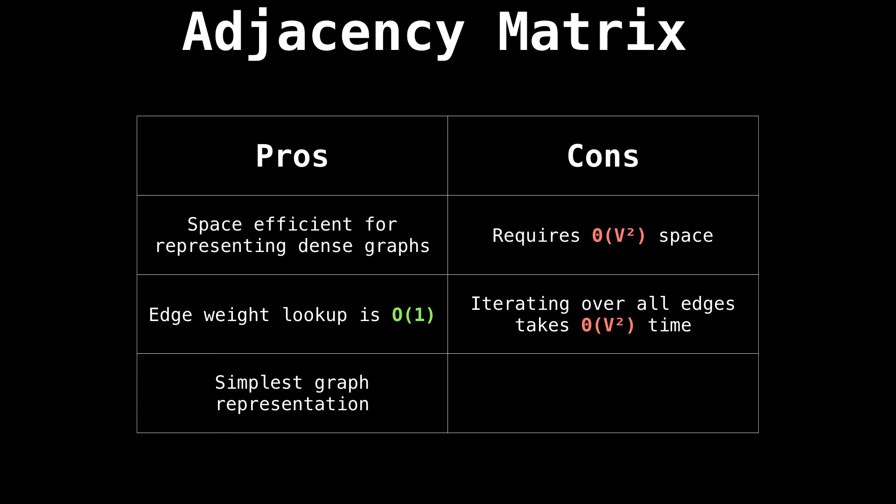This matrix form has several advantages. First, that it's very space efficient for dense graphs, that is graphs with a lot of edges. The edge weight lookup can be found in constant time, which is quite nice. And lastly, I would argue that it is the simplest form of graph representation you can have.